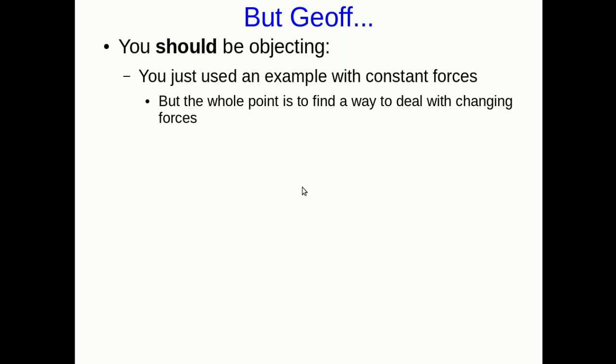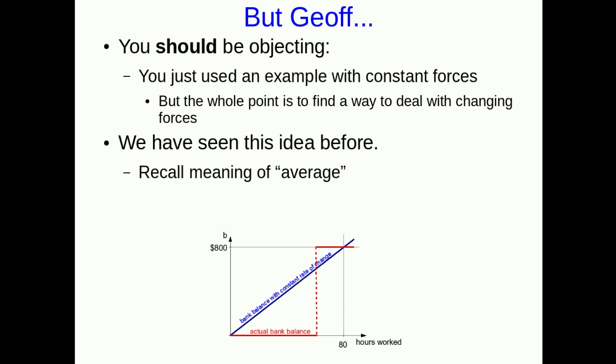Those two situations I just described used constant forces. And so you should be objecting, wait a minute, Jeff, you were going about this because we want to deal with changing forces, but you're using examples with constant forces. What's up? Well, we're actually going to use another idea we've seen before. Remember this idea of average. So for example, way back we talked about this bank balance and how you can think of a constant rate of change of your bank balance, but what really happens is that your bank balance doesn't change except on payday, it jumps up suddenly, but it has the same effect as an average rate of change.